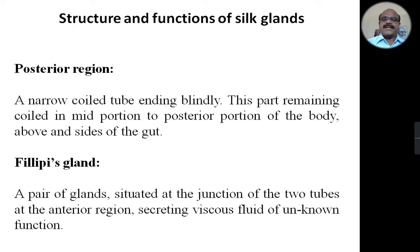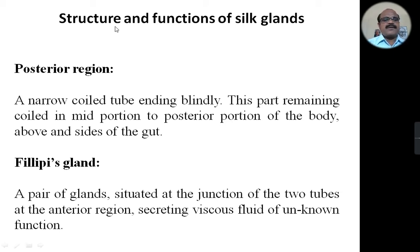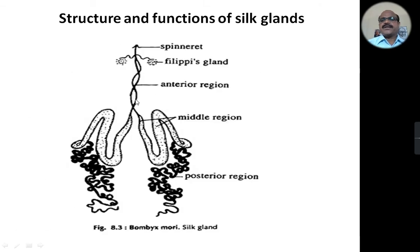there are paired specialized glands present. They are the Philippis glands. A pair of these Philippis glands is situated at the junction of the two tubes at the anterior region, secreting viscous fluid of unknown function. You can observe these are the specialized pair of two Philippis glands present at the anterior region of the silk gland; they secrete a viscous material which is unknown in function.